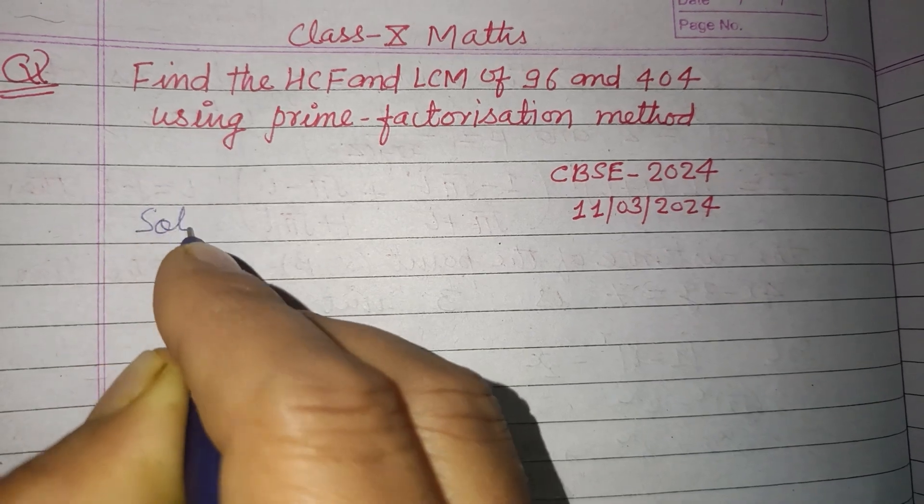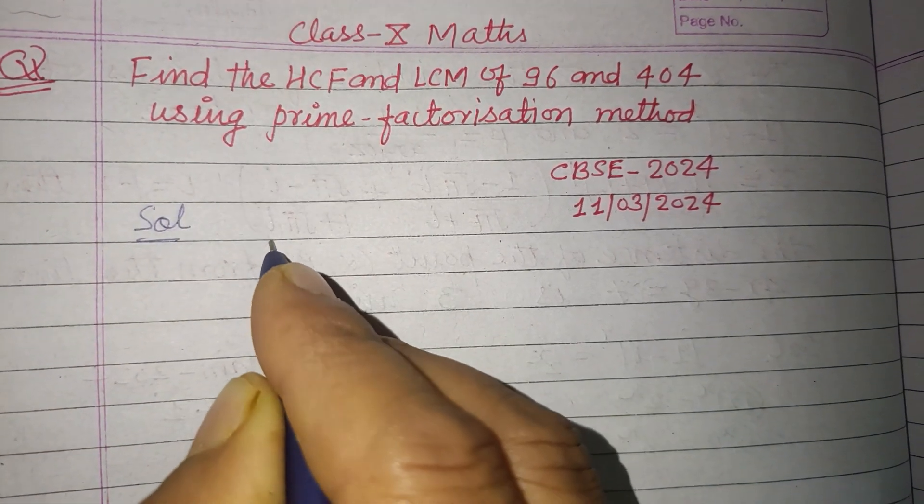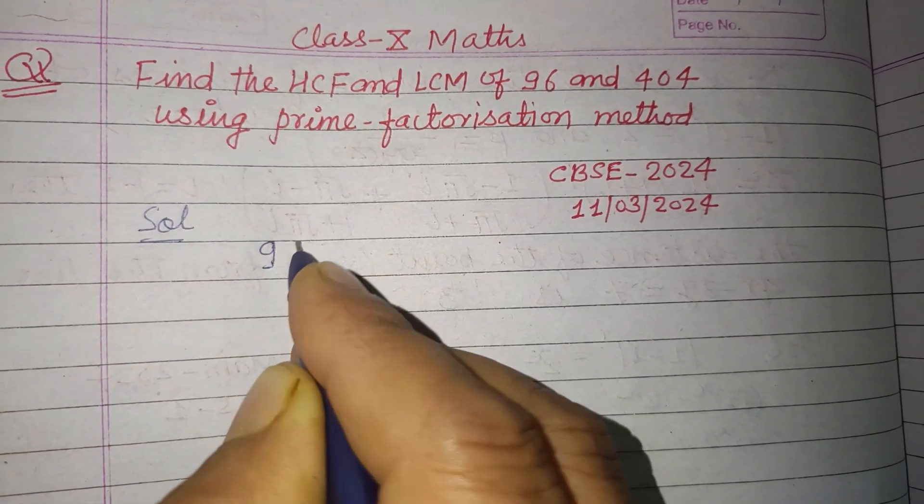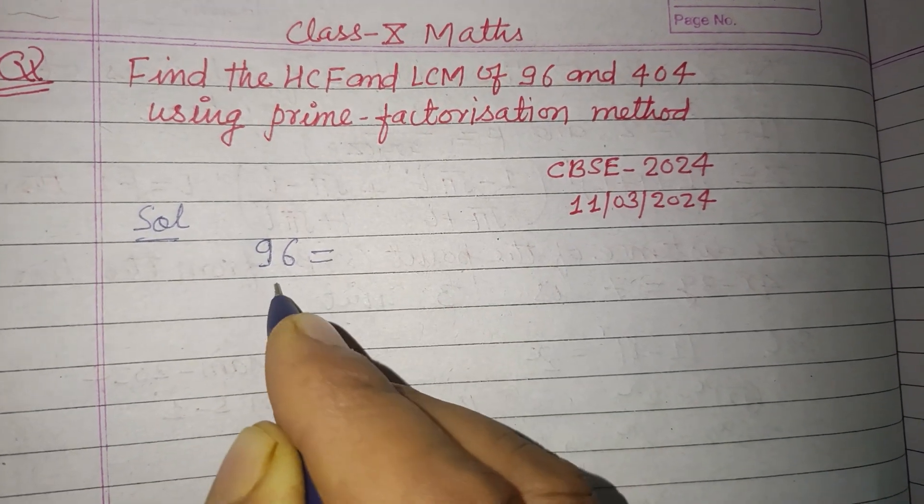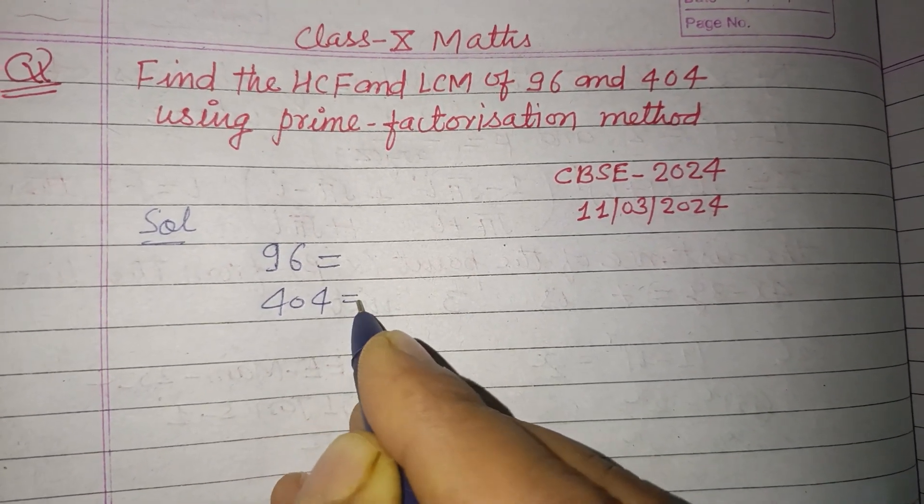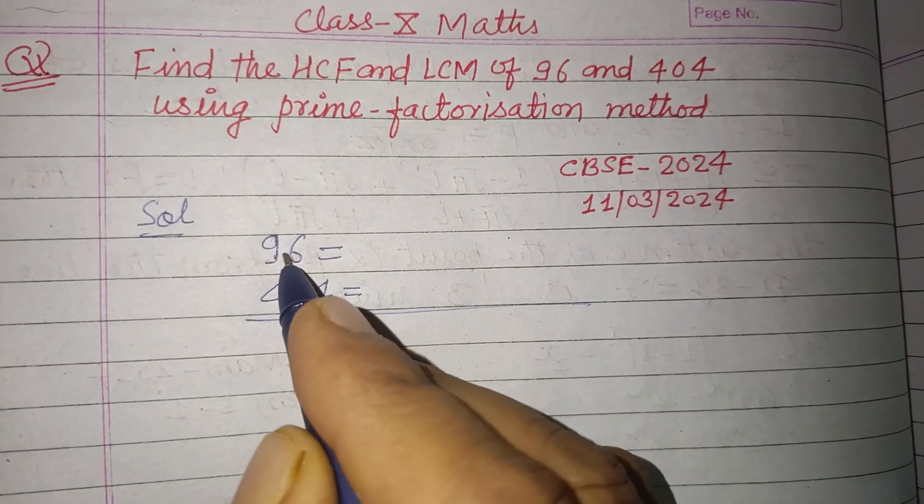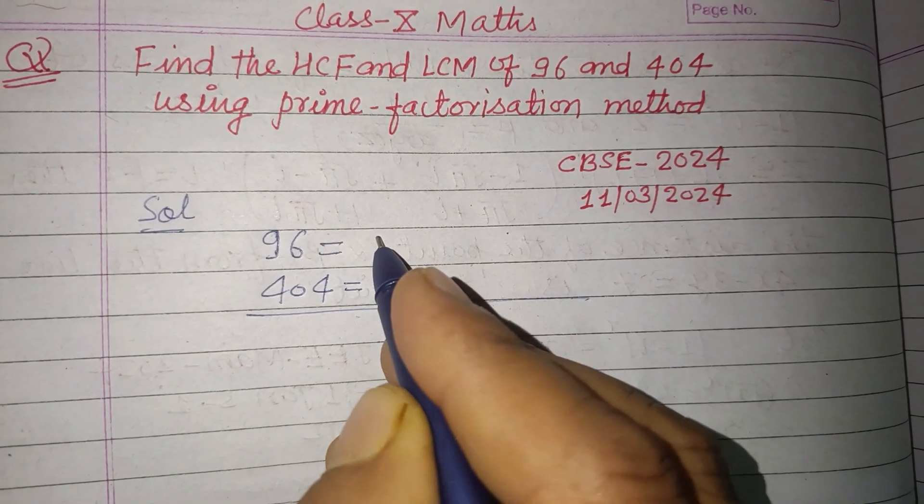So students, here we have two numbers, 96 and 404. First we make their prime factorization.